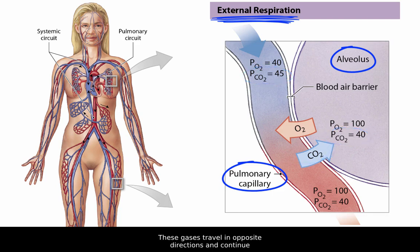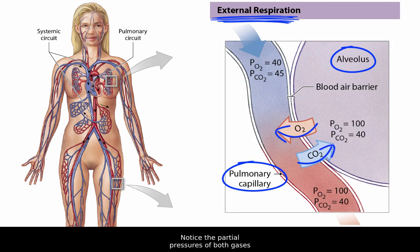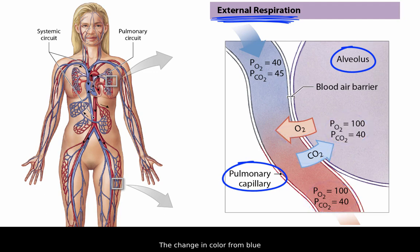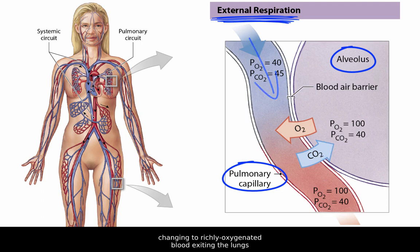These gases travel in opposite directions and continue to the point of equilibrium. Notice the partial pressures of both gases in the blood returning to the heart equals that inside the alveolus — PO2 is 100, and PCO2 is 40. The change in color from blue to red represents deoxygenated blood entering the lungs, changing to richly oxygenated blood exiting the lungs and returning to the heart.